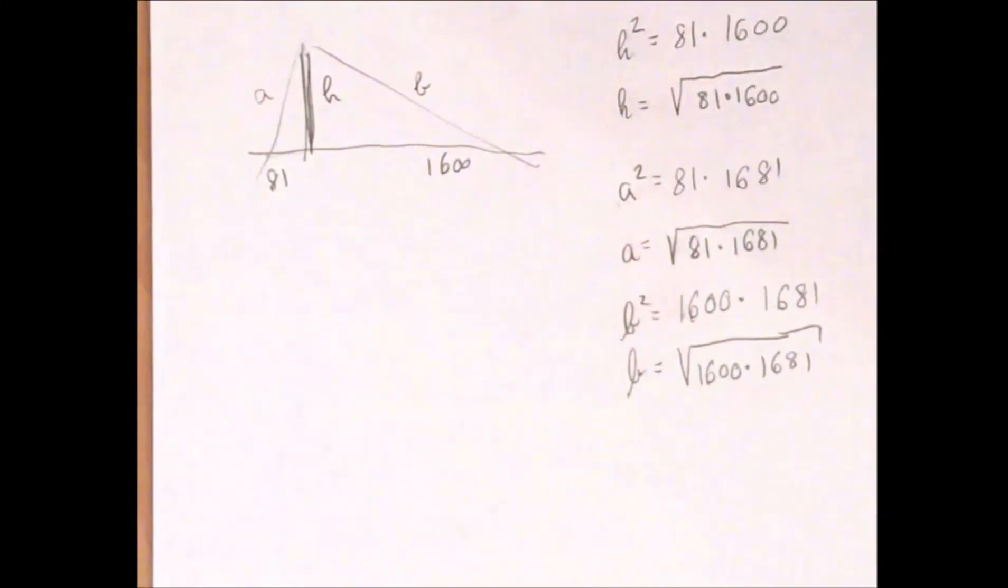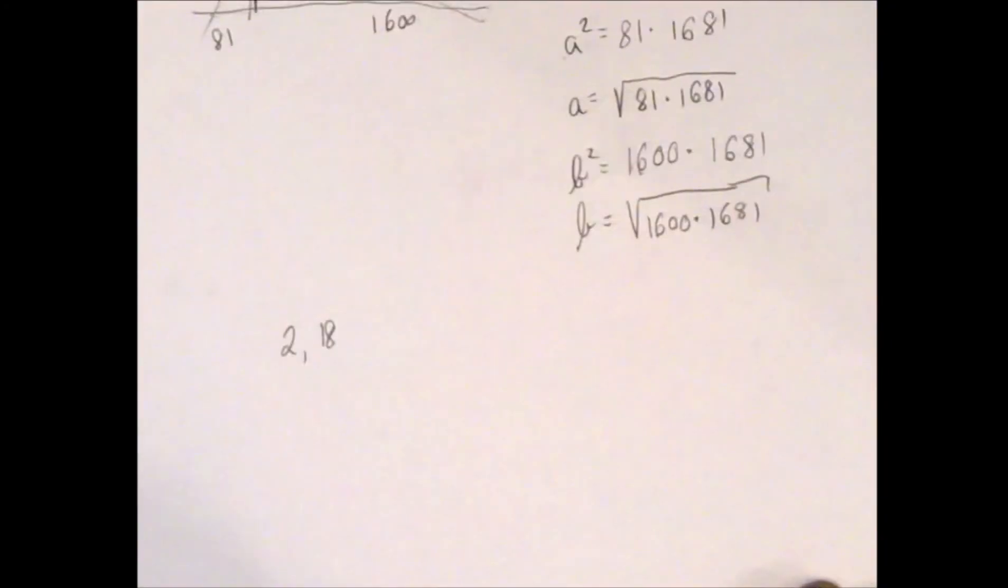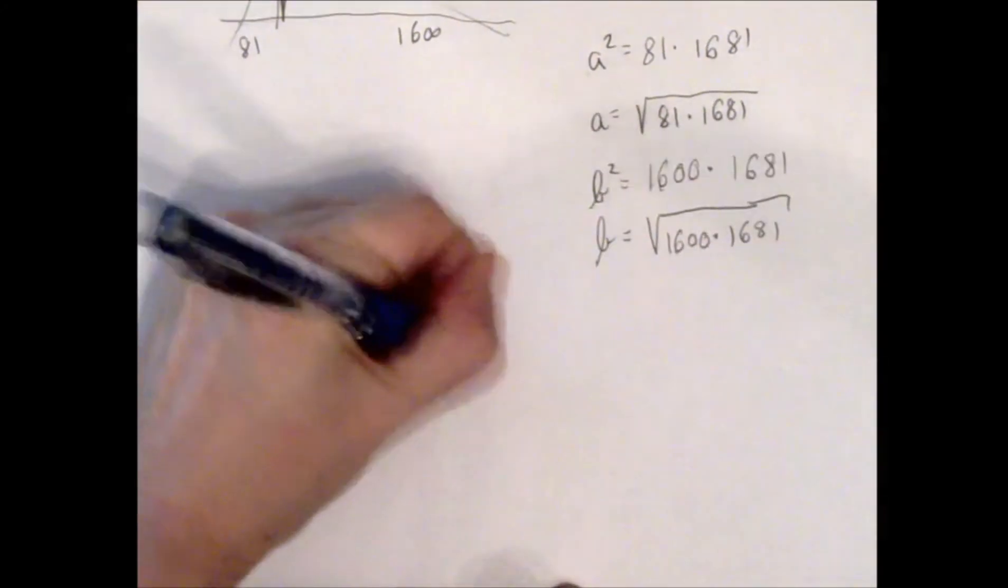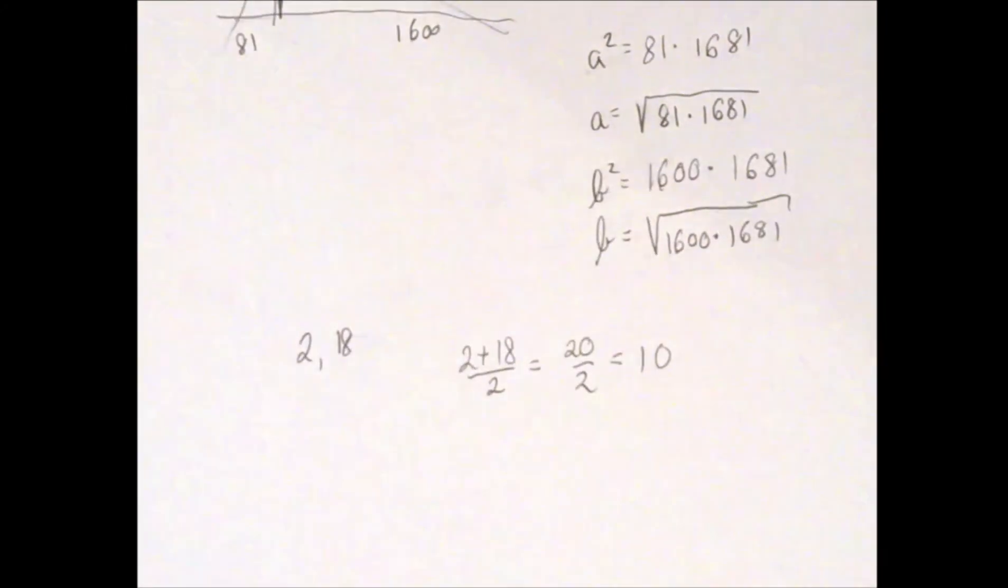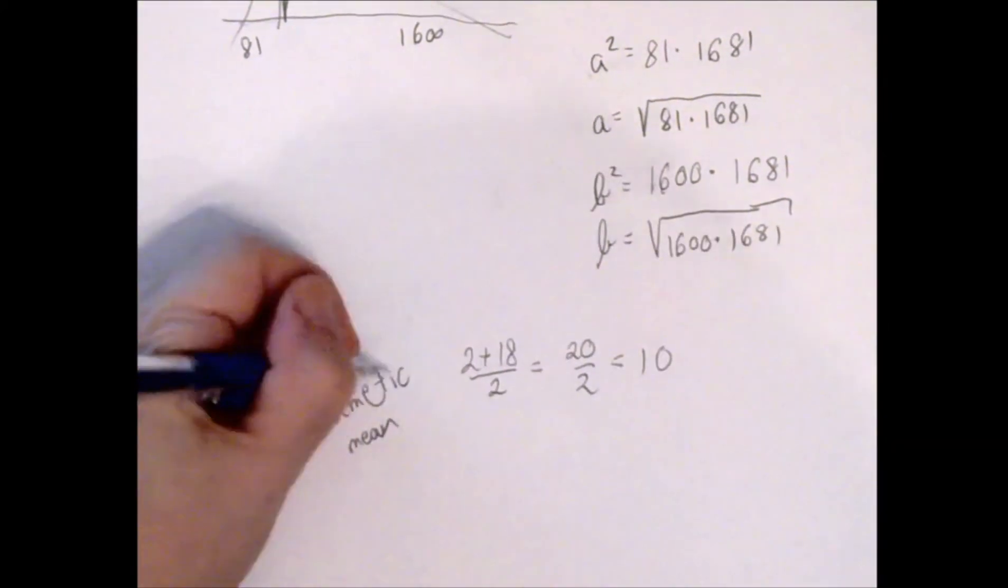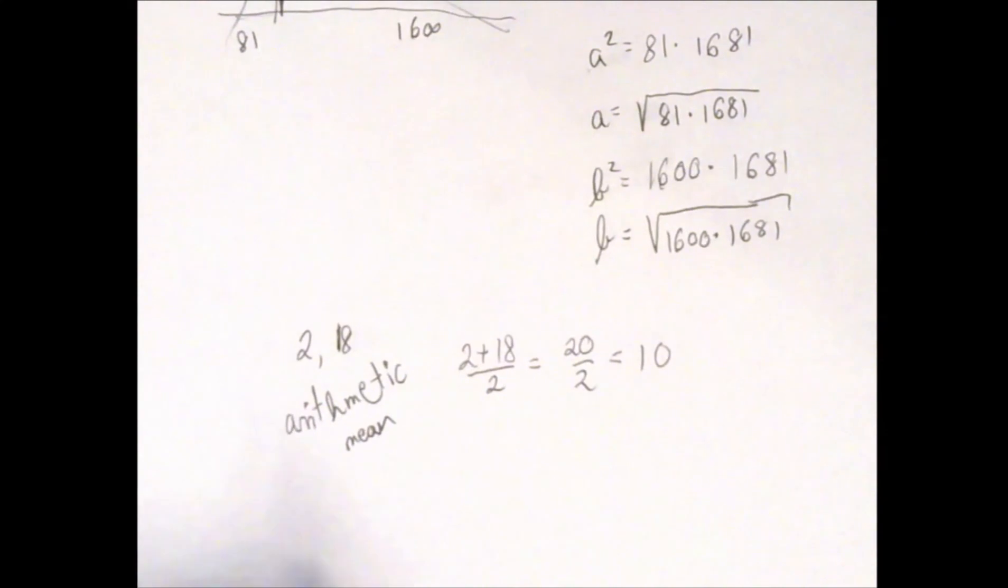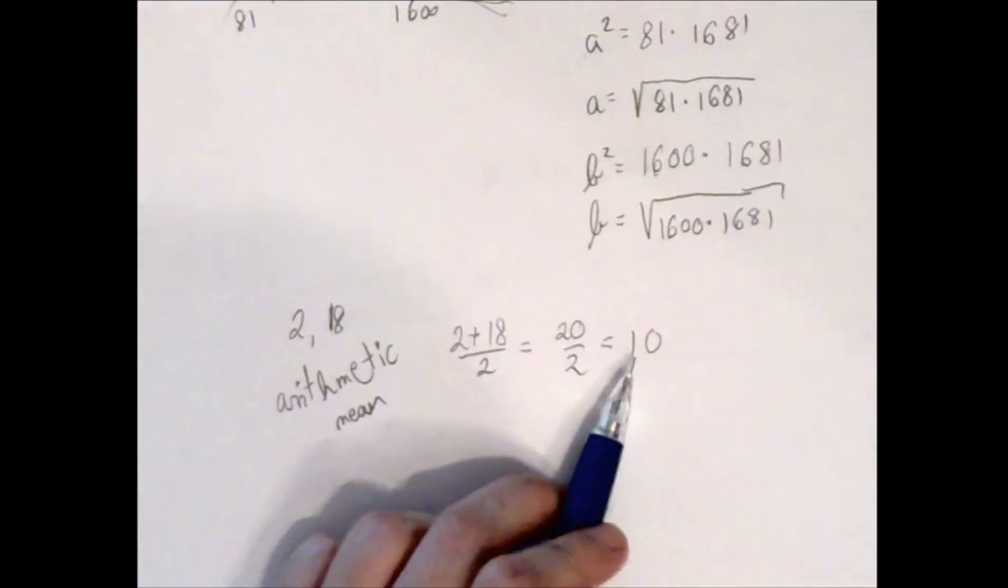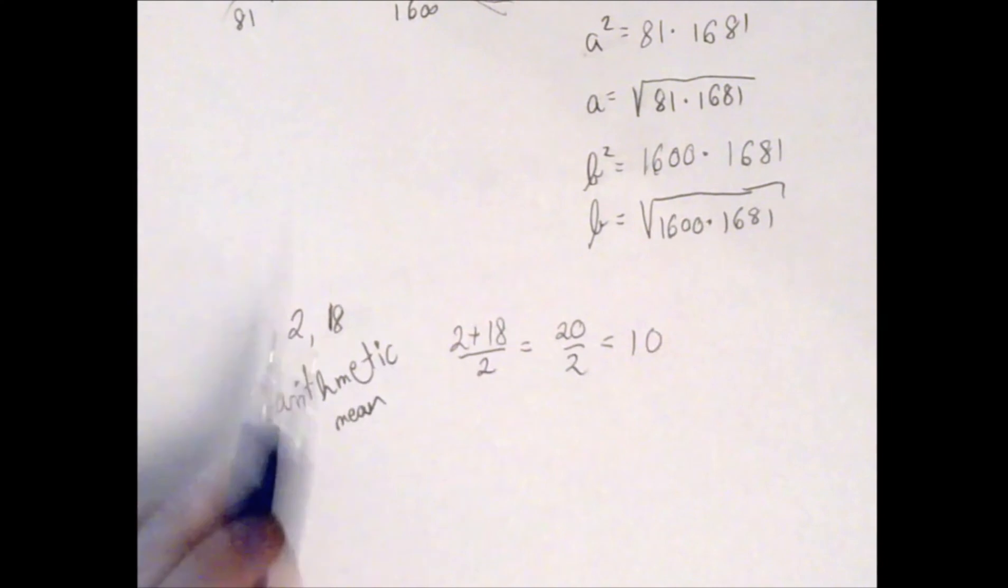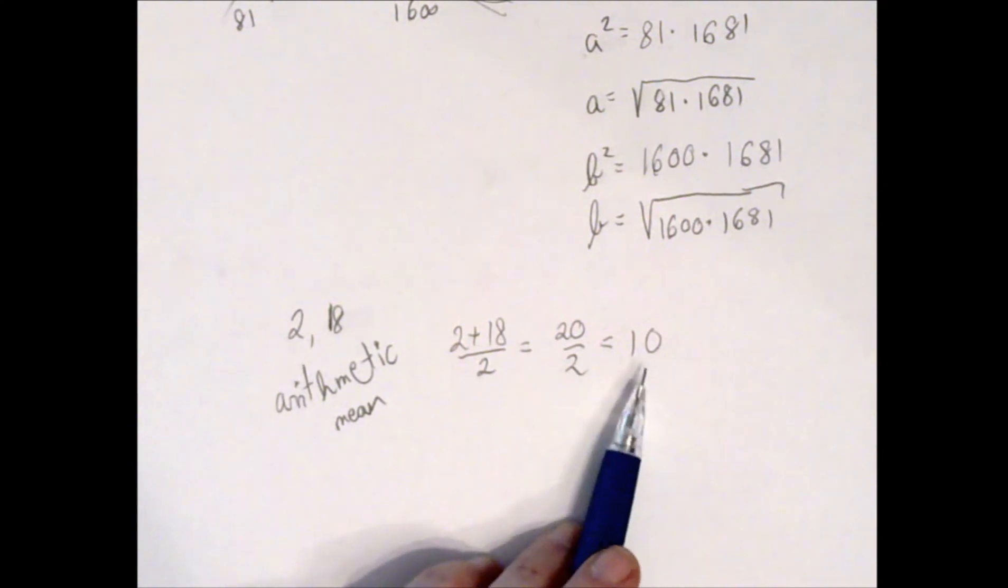Consider now the numbers 2 and 18. The average of these two numbers is 2 plus 18 divided by 2, which is 20 over 2, which is 10. As it turns out, there are more than one type of average. This one has a separate name—this is called the arithmetic mean. Basically we take two numbers, 2 and 18, and we even them out with respect to addition. If you take 10 and 10, you get the same sum as with 2 and 18.